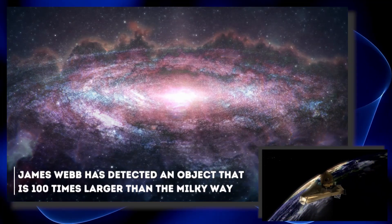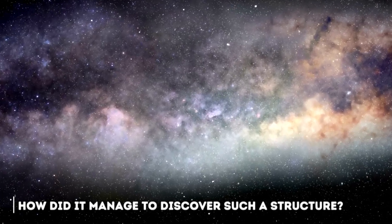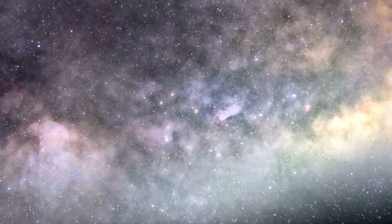Recently the James Webb has detected an object that is 100 times larger than the Milky Way. How did it manage to discover such a structure? And what does this mean for humanity?